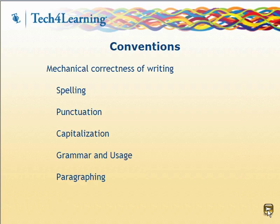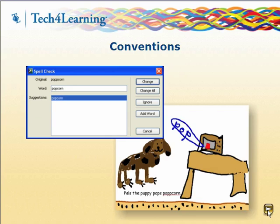Conventions refers to how mechanically correct the writing is. Conventions are divided into spelling, punctuation, capitalization, grammar usage, and paragraphing. Pixie and Wixie include a spell check students can use to check the correctness of a text object or selection. You can also turn on inline spell checks so that students can see misspelled words as they are writing.